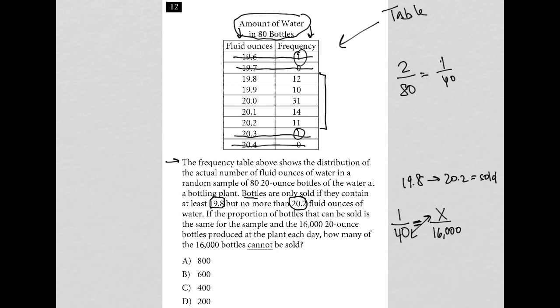So when I solve this by cross-multiplication, I can see that I get 40x is equal to 16,000. I just simply divide both sides by 40, and I end up with 400 as my answer. So choice C is the correct answer here.